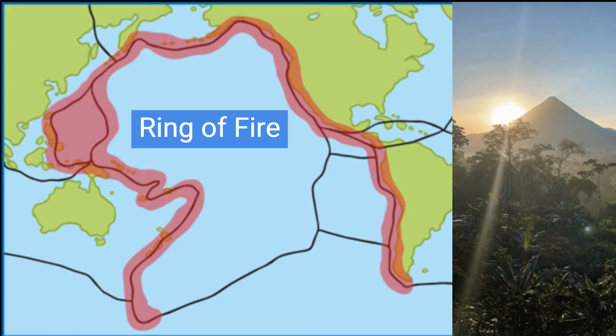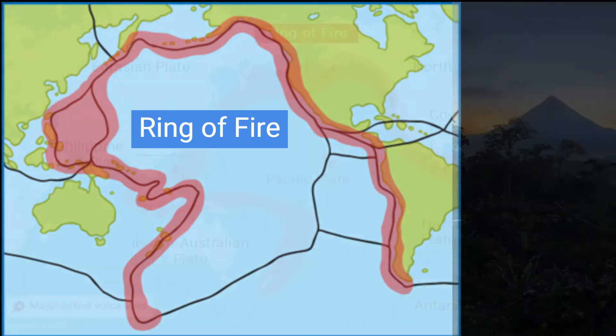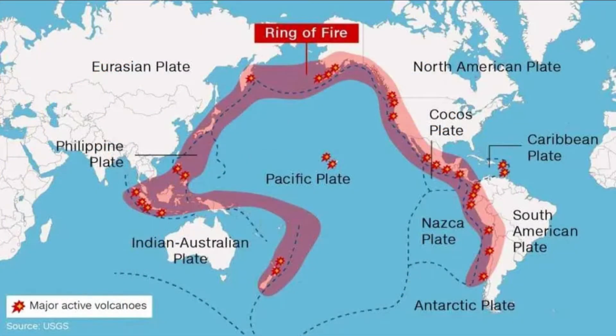Where the Pacific plate meets other plates, it can either slide under them — a process known as subduction — move past them, or push against them. These interactions cause a lot of geological activity, including earthquakes and volcanic eruptions, which are common in the Ring of Fire region.